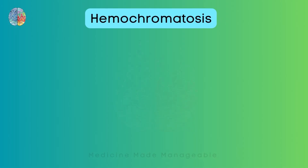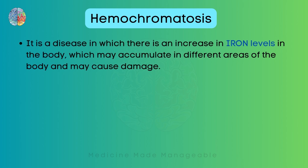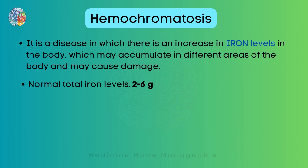So what is hemochromatosis? It is a disease in which there is an increase in iron levels in the body. I've seen some students confusing it with Wilson's disease, but that is excess of copper and this is excess of iron. So please remember that. The normal total iron level is 2 to 6 grams — not per liter or per deciliter, but the total amount of iron in the body. But in hemochromatosis, the levels may be more than 50 grams, which is a lot.